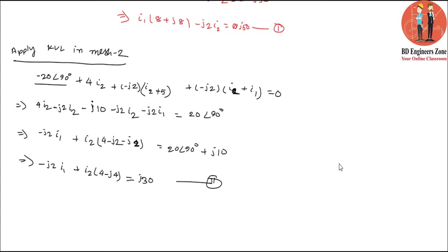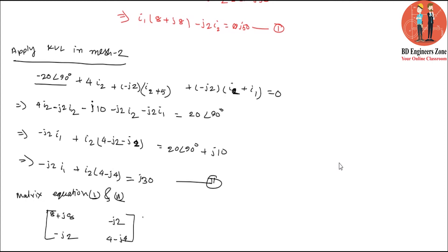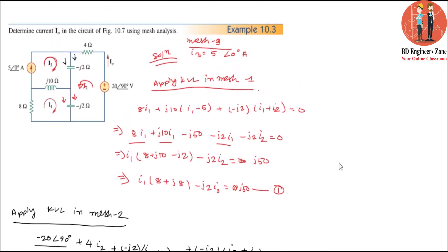Setting up the matrix equations. Equations 1 and 2 in matrix form: the matrix equation gives 4·i1, i2, j50, j30·i2 — with coefficients j50 and j30.